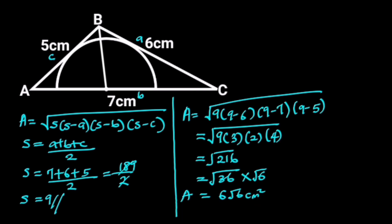Next, let's draw a straight line from B to the center of the semicircle. Notice that this line divides triangle ABC into two triangles. Let the center of the semicircle be D. Let's draw another straight line from the center of the semicircle to the tangent on line AB, and another straight line from the center to the tangent on line BC. If we call these points E and F, notice that line DE is the radius of the semicircle, and likewise line DF.